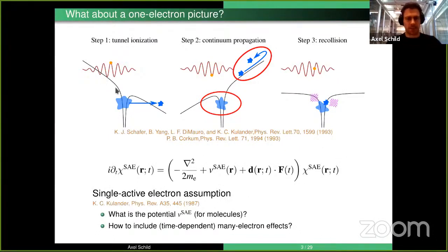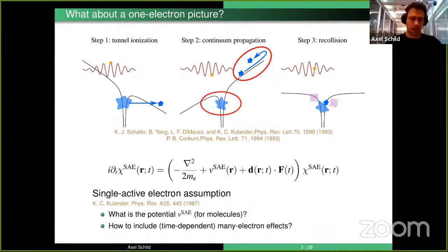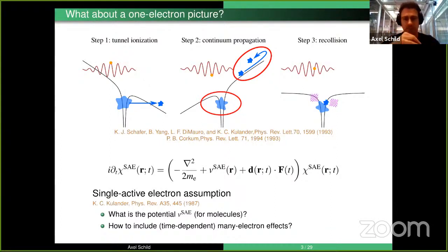This is kind of a single-electron picture, and many models are based on the single active electron (SAE) assumption: you have a wave function of one electron propagated in an effective potential with some additional laser field interaction — here in the length gauge and dipole approximation. The main point is that you have a one-electron potential to describe your system. For atoms we can guess a sensible potential, but for molecules it's a bit more of a challenge.